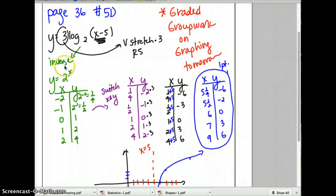So what I want you to do is find the inverse, which in your case is going to be y equals 3 to the x, because it was a base 3 log. And then you're going to make your table. You're going to switch your x and y.